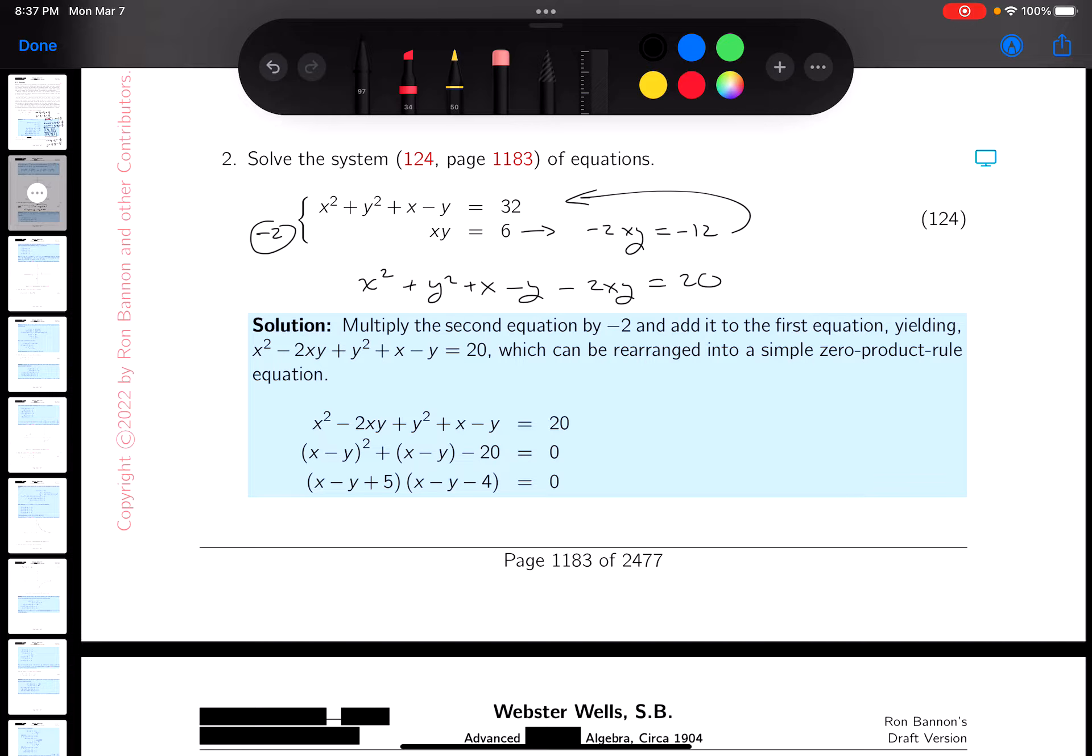And now what I'm going to do is rewrite the equation. I'm going to rearrange it. So I'm going to rearrange it to x. Let's take a look at this. x squared minus 2xy. I'm just rearranging it so it looks like I can factor it, because I'm going to use a zero product rule if I can. So x squared minus 2xy plus y squared. And then what do you get? Well, you get x minus y. Plus x minus y minus 20 equals zero.